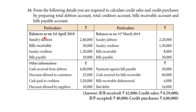Balance as on 1 April 2018 — the opening balance: Sundry debtors $2,40,000; bills receivable $30,000; Sundry creditors $1,20,000; bills payable $10,000.